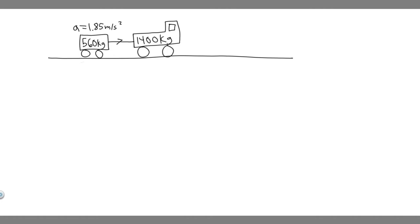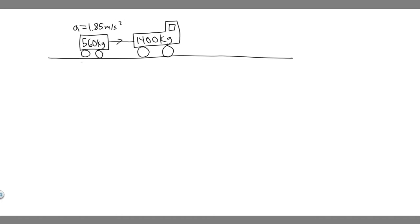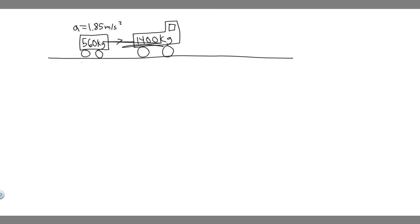The first thing you always want to do is draw what's going on. So we have this trailer, which is 560 kilograms. It's going to be accelerating at 1.85 meters per second squared because there's going to be this car — 1,400 kilograms — pulling it. We're going to have a tension force here because it's going to be pulling the trailer this way. Now let's go ahead and start with A.